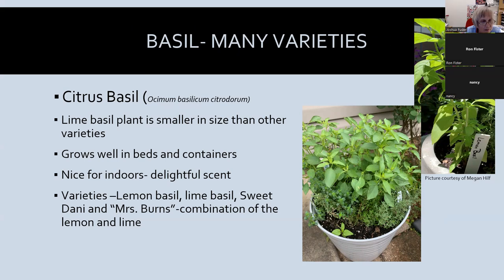I like citrus basils — most know lemon basil, but there's also lime basil, which is my favorite. The leaf is a little smaller but smells just like a cut lime. It's very nice in containers and in cut flower arrangements. Lemon basil varieties I like include Sweet Dani; for lime basil there's just Lime Basil; and Mrs. Burns is a combination of lemon and lime.